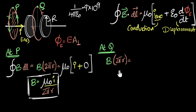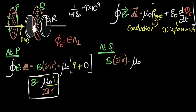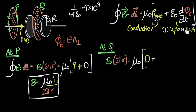Now the right-hand side for Q: we attach a flat surface to the loop. What current punches through this surface? There is no current — it's between the plates of the capacitor where there's vacuum and no charges flowing. So the conduction current is zero. Now there must be some displacement current; let's see if it's negligible this time.